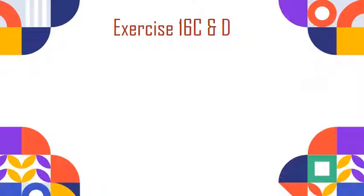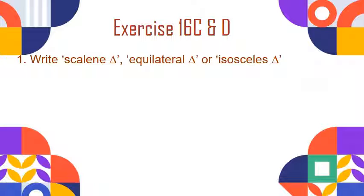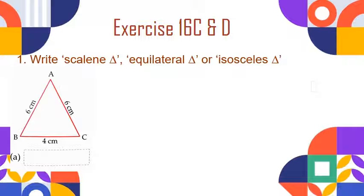Now let us revise some of the questions from exercises 16C and D. The first question is: write whether the triangle is a scalene triangle, equilateral triangle, or isosceles triangle. In the first figure, we have triangle ABC. This triangle has two sides equal to six centimetres and one side equal to four centimetres. A triangle in which two sides are equal is called an isosceles triangle.